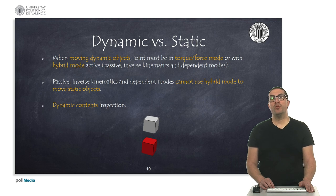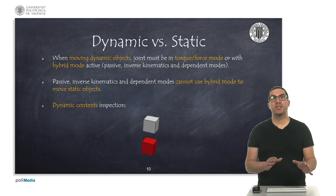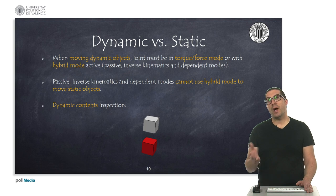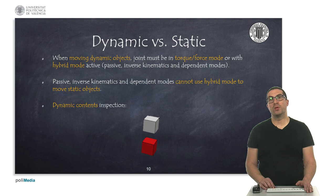When using joints, you must take into account if the object that you are moving is static or dynamic. For dynamic objects, we must use the force torque mode or actuate, so we activate the hybrid mode. If the object is static, you can use either a passive, inverse kinematic, or dependent mode, but then you cannot use the hybrid mode anymore.